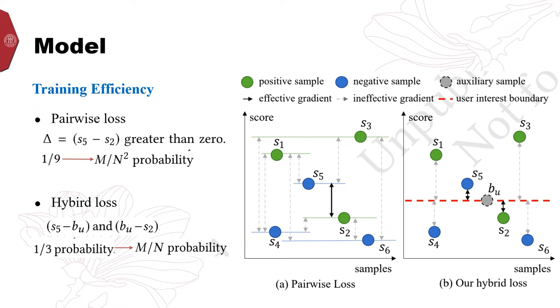That's one-ninth probability. For our hybrid loss, six pair training instances are generalized by positive and negative samples paired with the boundary BU. One-third are effective. That's S5 with BU and BU with S2.